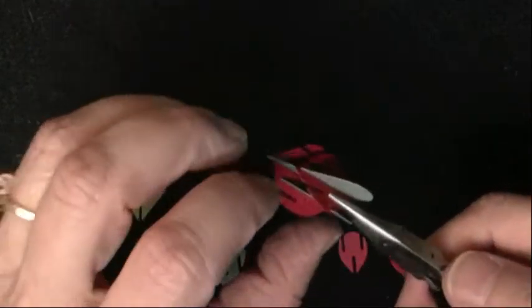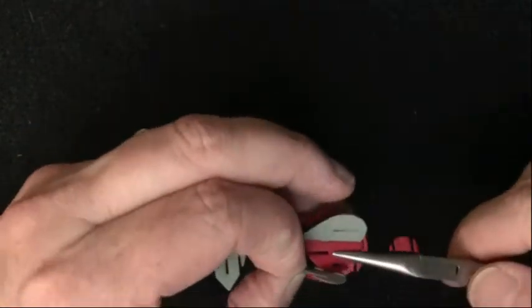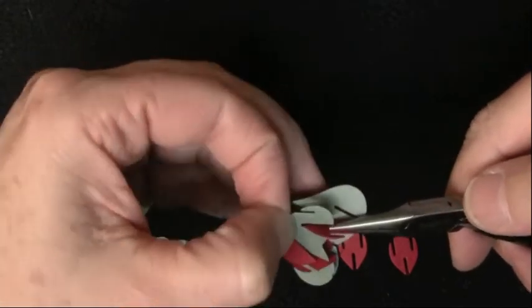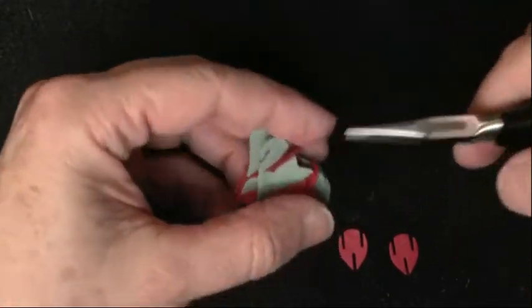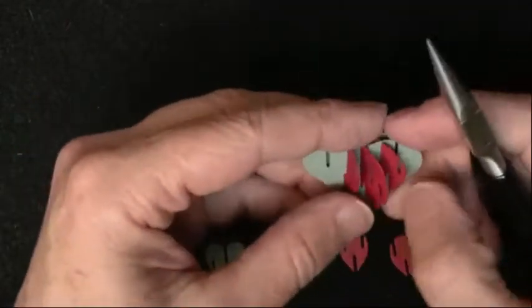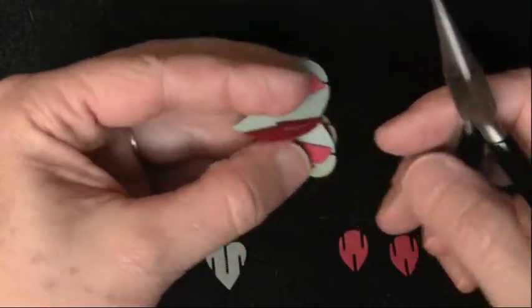I'll do it again. So here's my heart, and here's the teardrop and the little point coming up from underneath. Straighten everything out if it got tangled. And do the same thing on the other side.